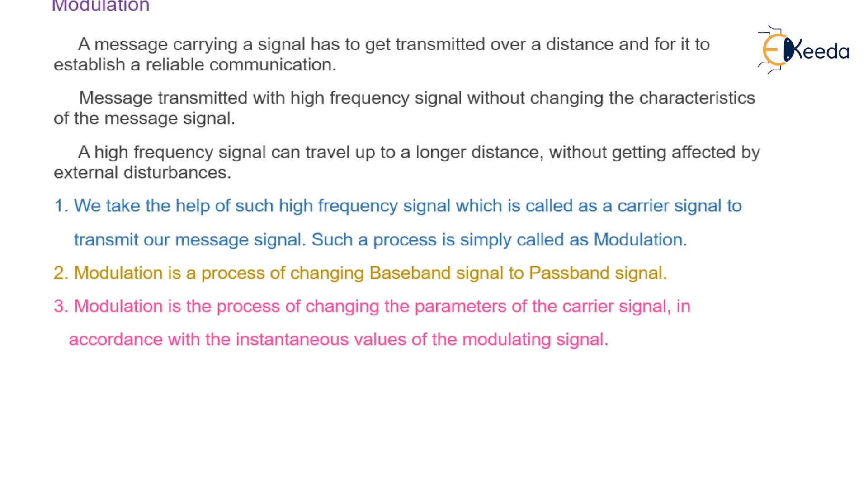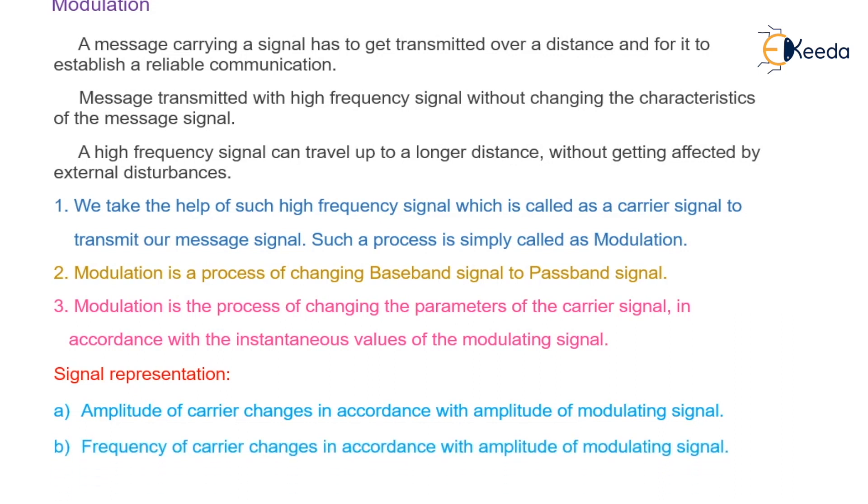Now here for signal representation we have three different signals. First, the amplitude of the carrier changes in accordance with the amplitude of modulating signal - we call it amplitude modulation. Second, frequency of the carrier changes in accordance with amplitude of modulating signal. Third, the phase of the carrier changes in accordance with amplitude of modulating signal, termed as phase modulation.